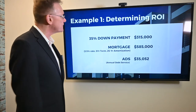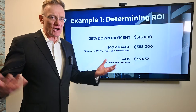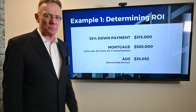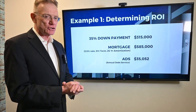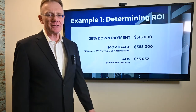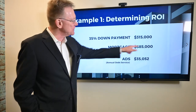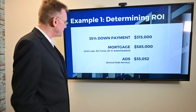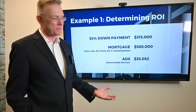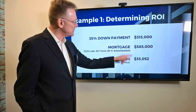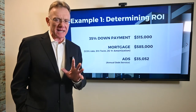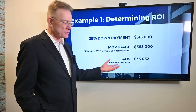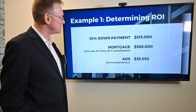Moving on — let's assume you're in a market like Ottawa currently, where you should be able to have positive cash flow with a 35% down payment. Using our $900,000 purchase price, 35% is $315,000, giving us a mortgage of $585,000. At a 3.5% rate on a five-year term amortized over 25 years, our annual debt service (ADS) — that is, how much you pay on your mortgage every year — is a little over $35,000.